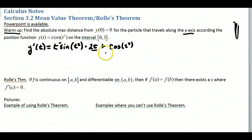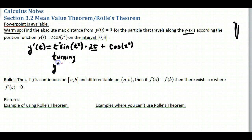Now I want to find out when I'm the maximum distance away from (0, 0), so I need to find the turning points. The turning points occur when y'(t) is equal to 0. So I'm going to go to my calculator and solve for those points.